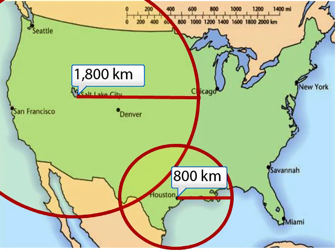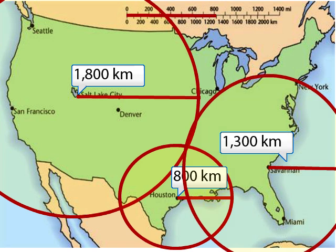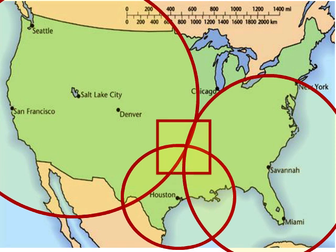So we measure 1,300 kilometers from Savannah. We draw our circle. And as you can see, all three of these circles now intersect in one spot. So I put a box around this spot.